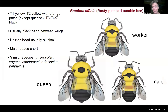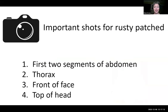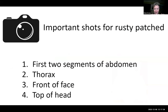Rusty patch bumblebee is a species of particular interest for a lot of folks. Again, those first two segments of the abdomen are ones we really need to see — these can be a little trickier if the bees have their wings folded up covering the thorax. So if you see something that looks like it might be rusty patch, try to make sure you can get good photos of those first two segments of the abdomen. The other typical things — getting the thorax and the front of the face — are really helpful for that group.